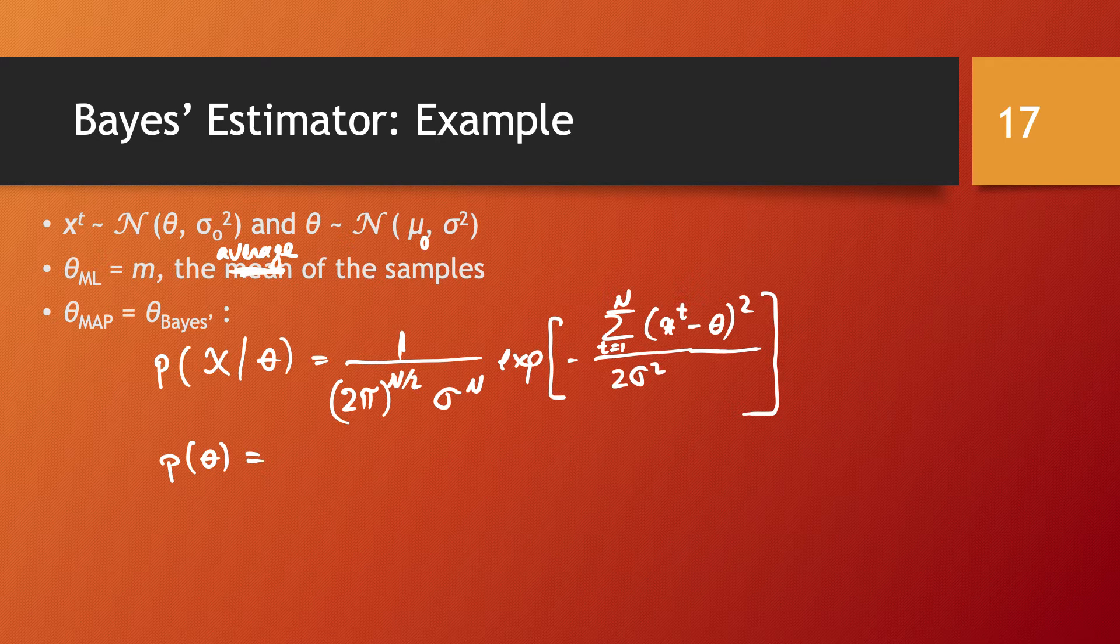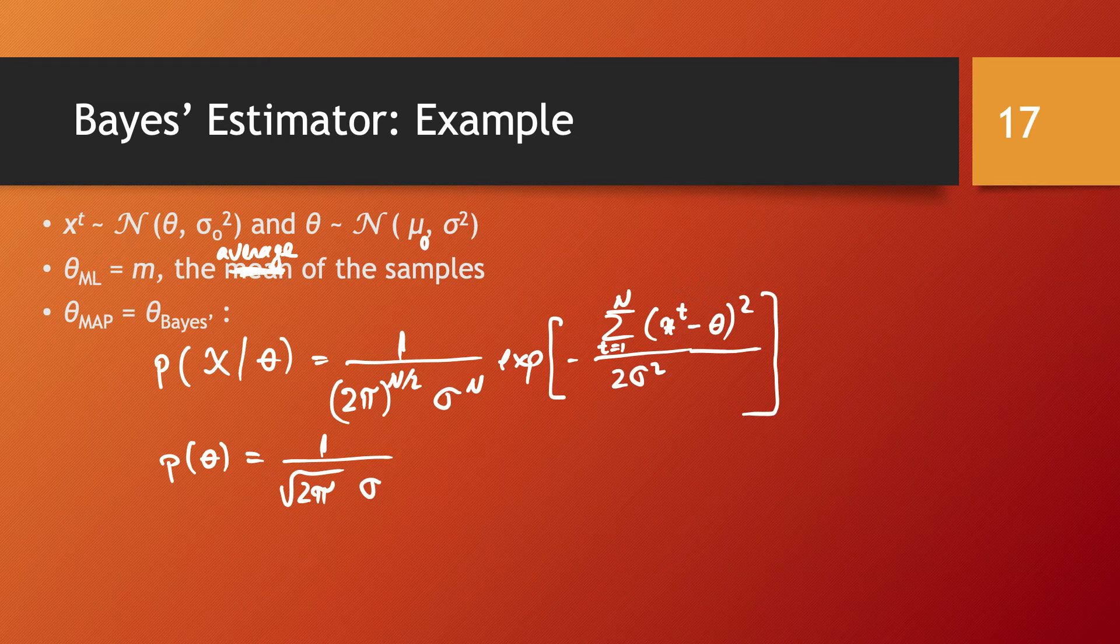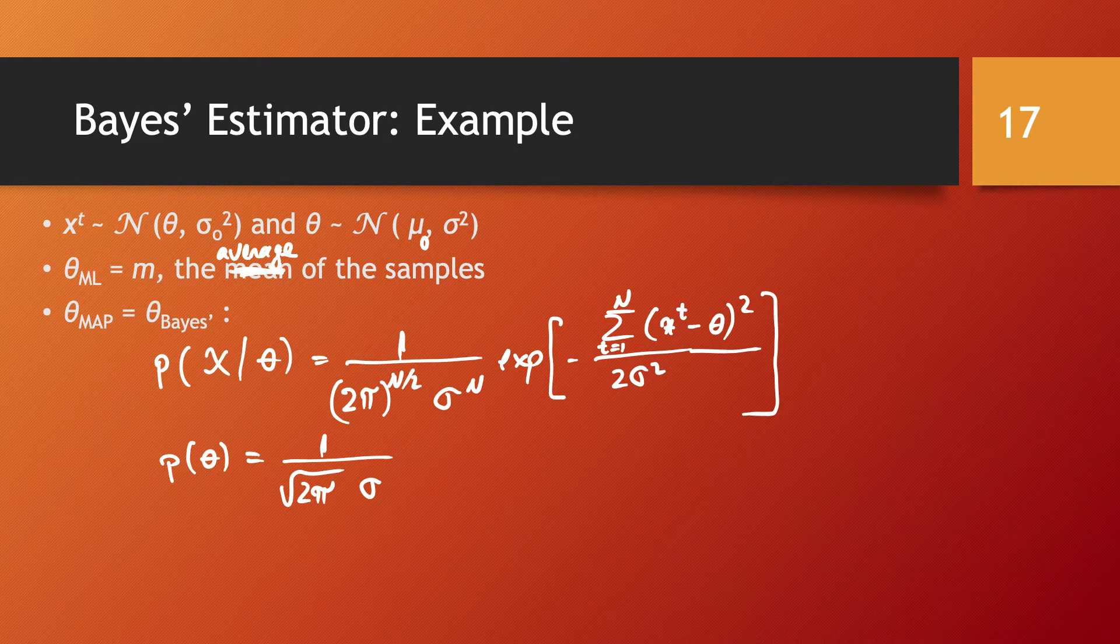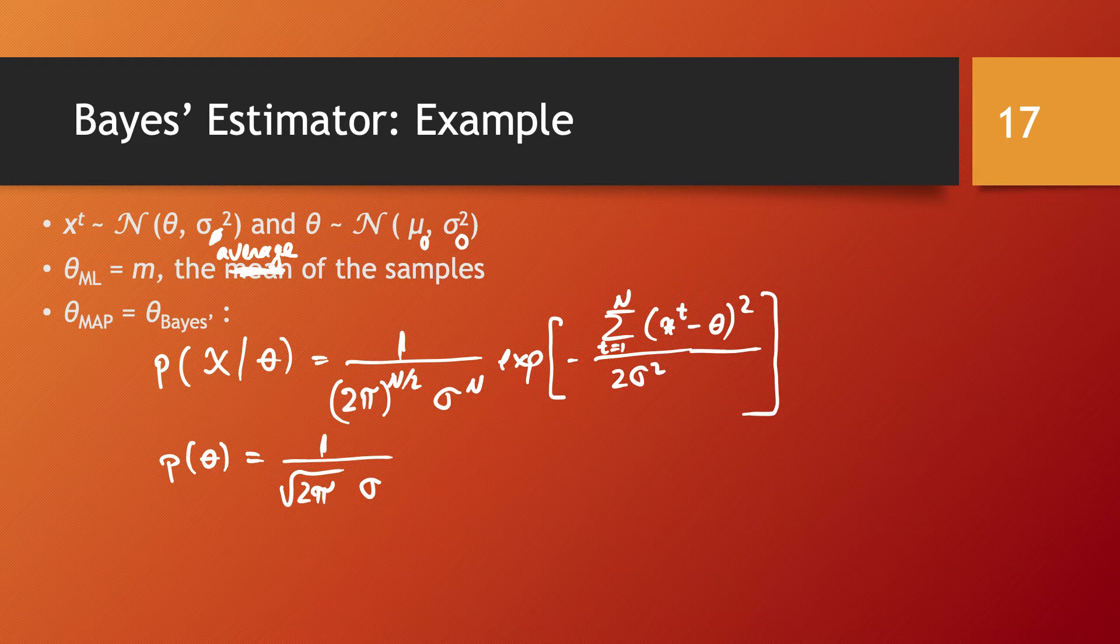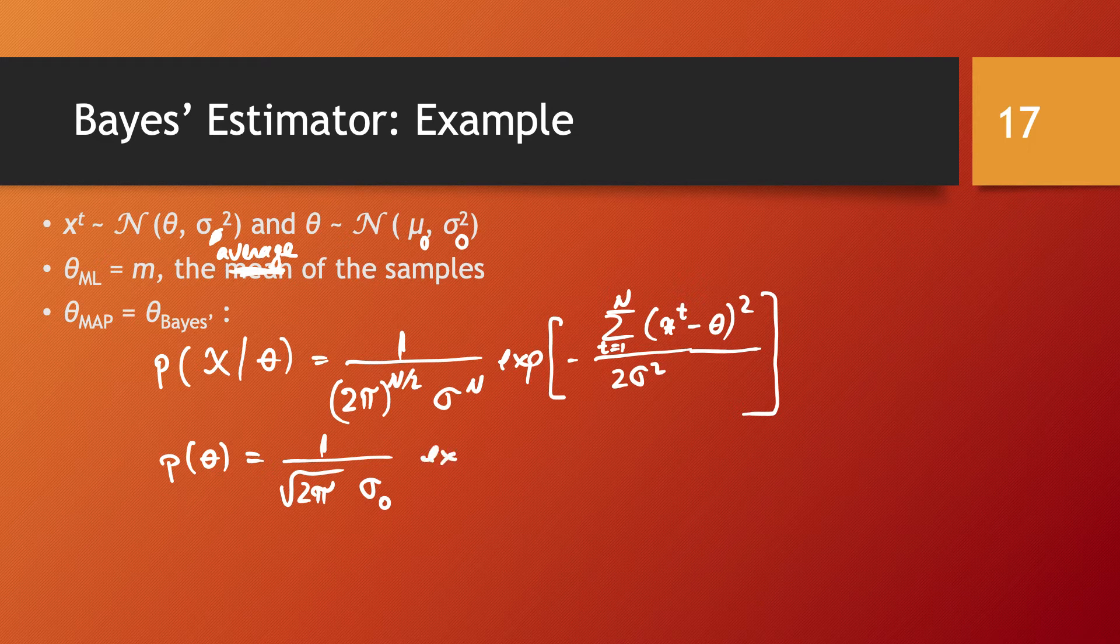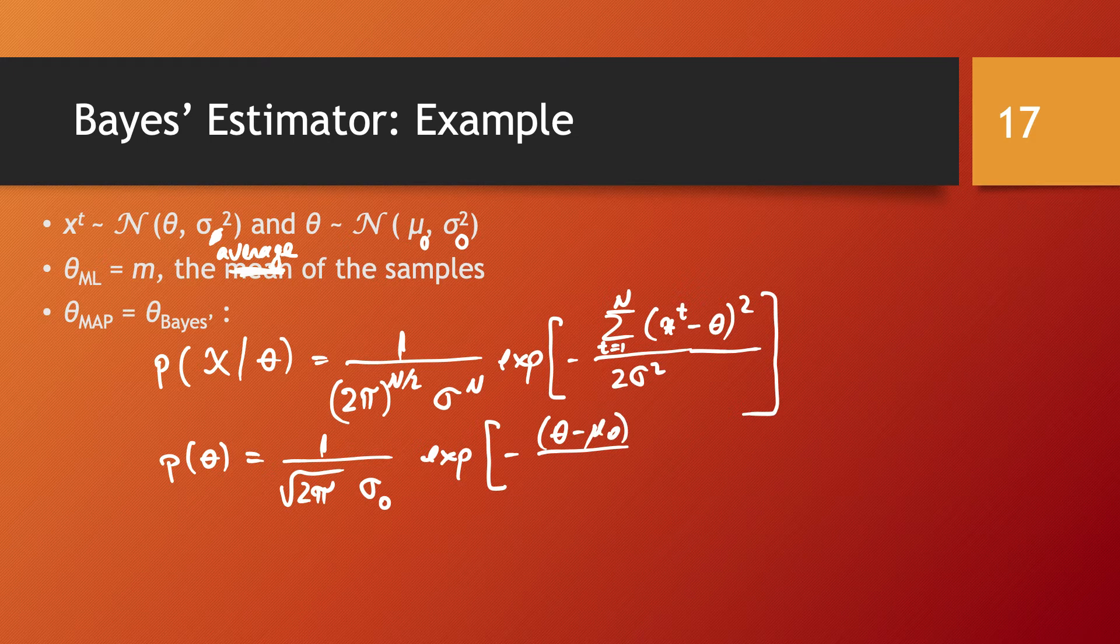and we have here minus, here we have 2 sigma squared, and here we have sum by t of the probability of x d minus theta squared, and the probability of theta, because this is normally distributed in this way, is 1 over square root of 2 pi times sigma. There is a correction: this is sigma 0 here, and I'm just going to have this as sigma. So it's 1 over square root of 2 pi times sigma 0, exponential applied to minus theta minus mu 0 squared over 2 sigma 0 squared.